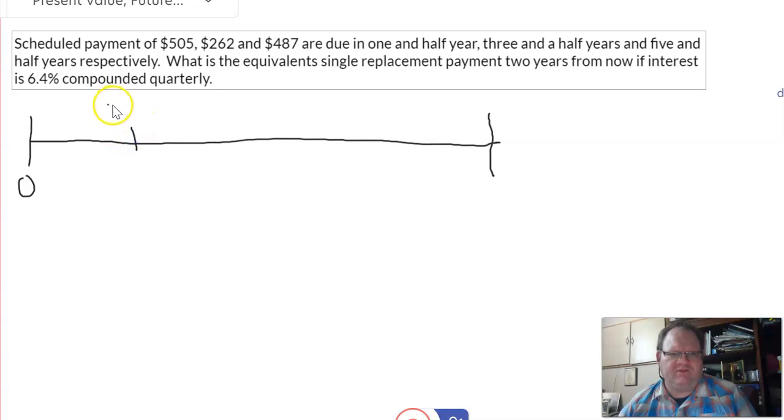So you have a $505 payment. It occurs in 1.5 years from here to here. You also have another payment of $262, which occurs in 3.5 years from here to here.